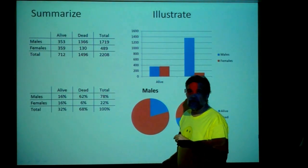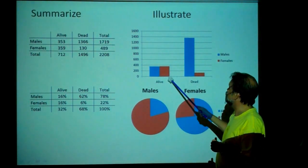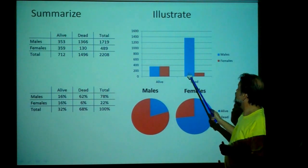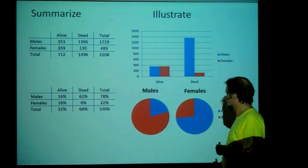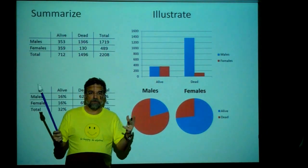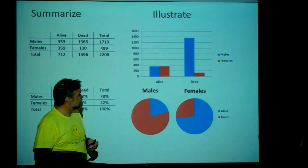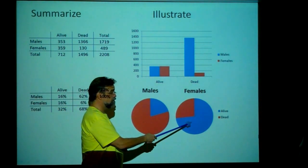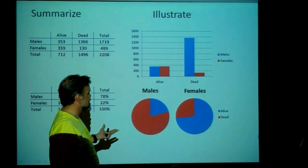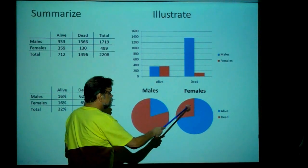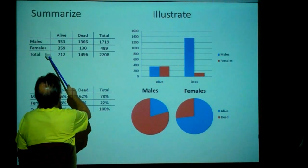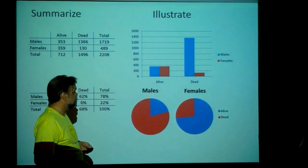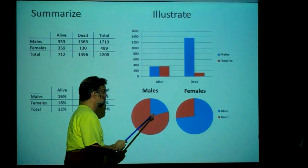This becomes even more obvious in the graphics. Out of the people found alive, it's about the same number of males as females. But out of those who died, it was overwhelmingly male. Two pie charts — one for males, one for females — show this well. The male pie chart is overwhelmingly one color, the female chart the other. Out of the women on board, 359 were found alive and 130 died — way better to be female on the Titanic than male.